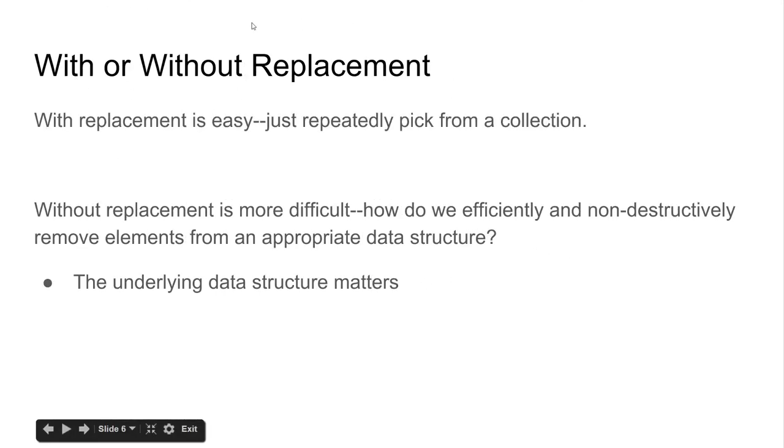So we have this other problem, which is with or without replacement. So with replacement is easy, just repeatedly take from a collection. For instance, if I had an array with objects that represented cards in the deck, and I wanted to generate a bunch of cards from the deck with replacement - in other words, the actual physical act of taking a card out, recording what it is, and then putting it back into the deck randomly - could just be done by randomly selecting from the array repeatedly for as long as you need to. And that's not really a problem. But without replacement is a little bit more difficult. How do we efficiently and non-destructively remove elements from an appropriate data structure? And the underlying data structure matters a lot for this.